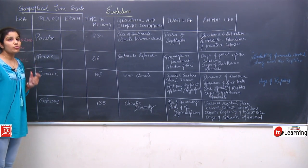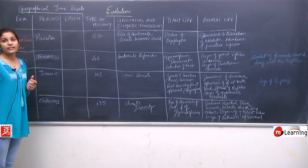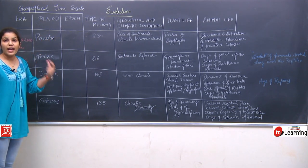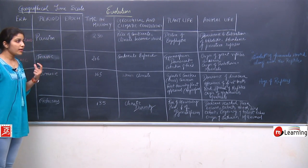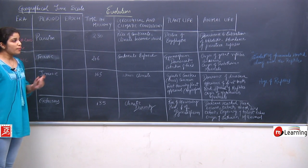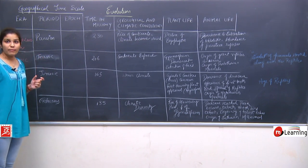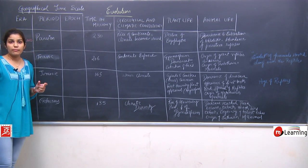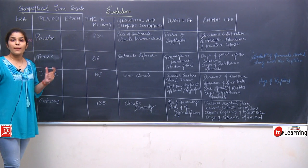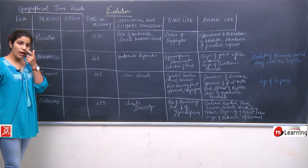The ferns were extincted and gymnosperms were dominant. In animal life, there was the origin of giant dinosaurs. The reptiles were dominant in the Permian period, and now the dominance of dinosaurs started — dinosaurs increased their numbers and became dominant in the Triassic period. There was also the origin of Prototherian mammals. Mammals started originating along with the lineage of reptiles, meaning when reptiles became dominant, mammals also started having their origin.